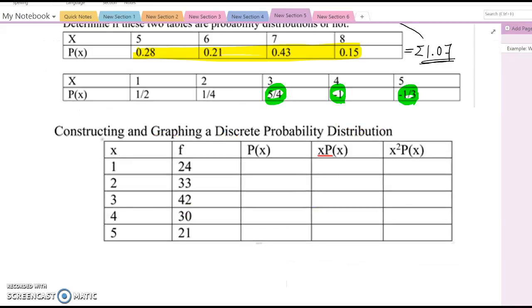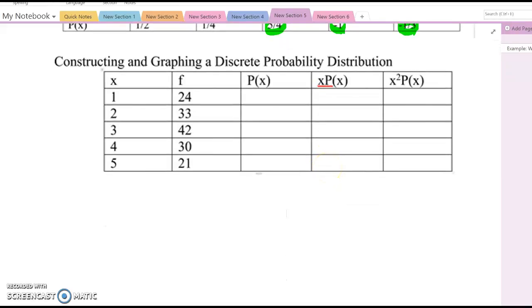Then look at the next question here: Constructing and graphing a discrete probability distribution. In order to do this, now we want to use percentage value or the probability value instead of frequency value. Therefore, you need to find the relative frequency for each category. As you know, the relative frequency, you can divide each frequency value divided by total frequency. If you combine this all, the total becomes 150 here.